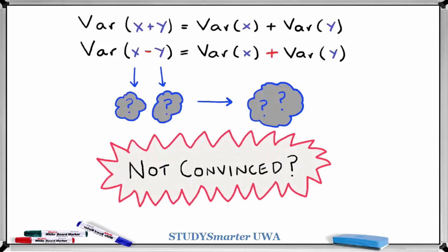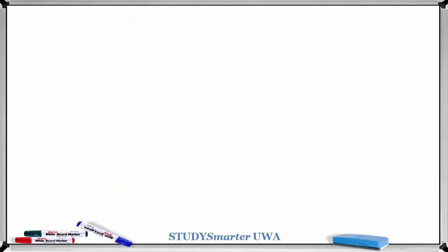If that doesn't convince you, that's fair enough. We'll take a slightly more mathematical approach. We'll look at the distribution of x plus y when x and y are just independent rolls of a fair die.